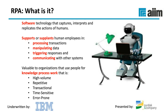RPA supports or supplants human employees in the processing, manipulation, triggering, or communication of data. If you've ever had to log into two different systems and literally key in or copy-paste data from one system to another, that's an ideal application for robotics. Ironically, in 2017 there are still many companies where large numbers of employees are literally copy-pasting data from one system to another because integrating large-scale enterprise systems is expensive, complicated, and difficult to do correctly. So RPA is a way of achieving a degree of systems integration without actually integrating the systems. We're looking for high-volume, highly repetitive, transactional tasks where time is sensitive. Many manual processes take far too long, particularly in a day when apps give us instant gratification, so robots dramatically reduce cycle time.